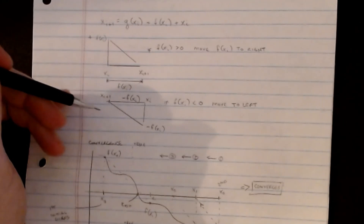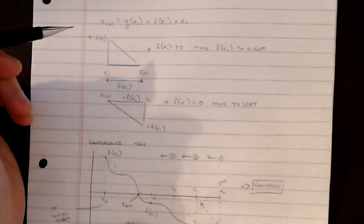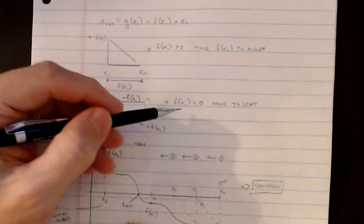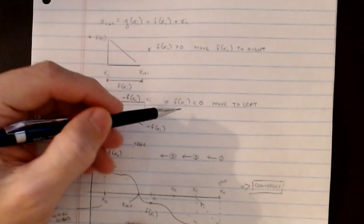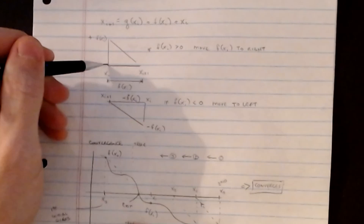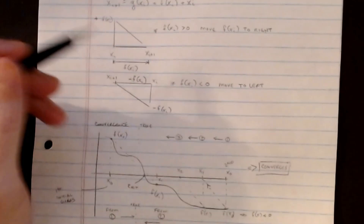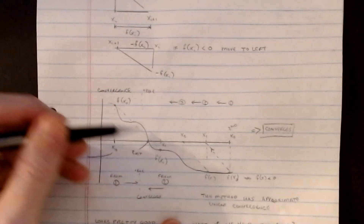Here's the general idea visually. If f(x_i) is greater than zero, we move to the right; if f(x_i) is less than zero, we move to the left. For a function with a negative slope, if we start with x naught on the high side and f is negative, the next guess moves right — and we can see we're drifting from x0 to x1 to x2, trending toward the root.